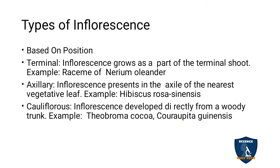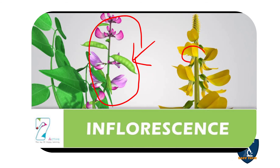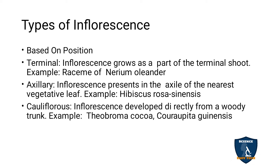Types of inflorescence: based on position, inflorescence is divided into terminal, axillary, and caulifloresence. Terminal inflorescence occurs at the shoot tip — example: raceme of Nerium oleander. Axillary inflorescence is seen in the axil of the vegetative leaf — example: Hibiscus rosa-sinensis. Caulifloresence is developed from the woody trunk — example: Theobroma cacao and Couroupita guianensis.